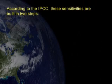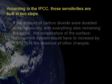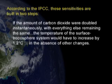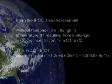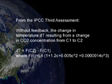But what is poorly communicated in the media is that these sensitivities are built in two steps. In the first step, scientists calculate the warming from CO2 alone, without any other effects. Most scientists believe this sensitivity is in the 0.8 to 1.2 range, as exemplified by this formula from the IPCC's third assessment.